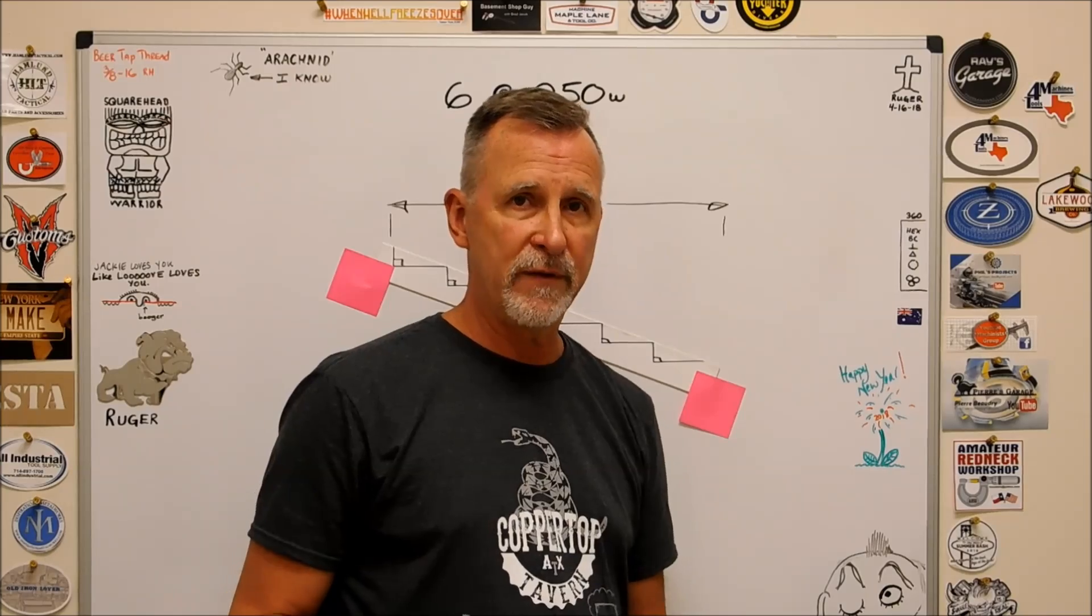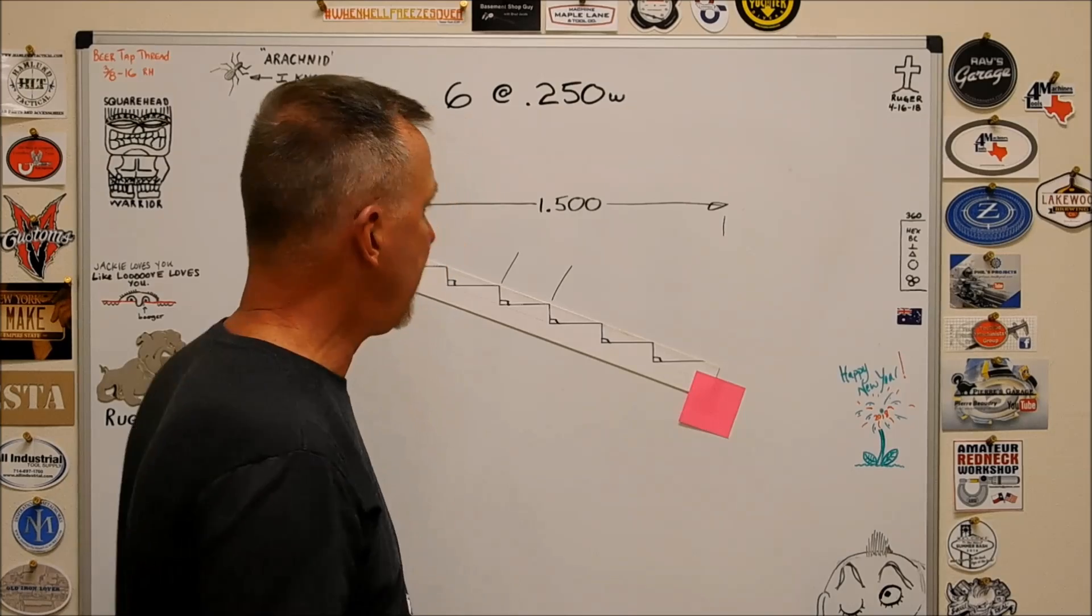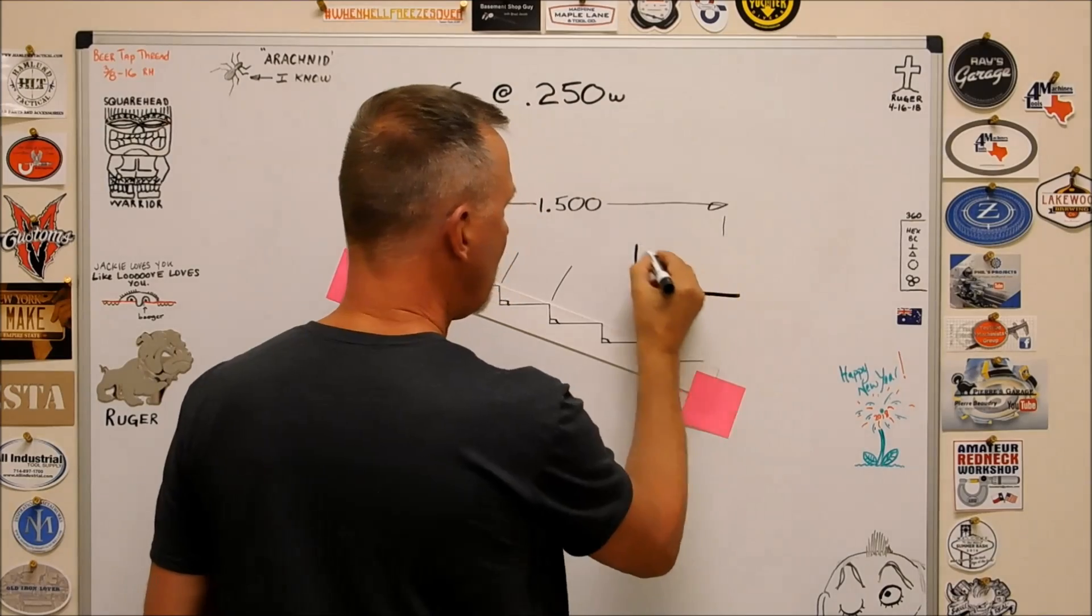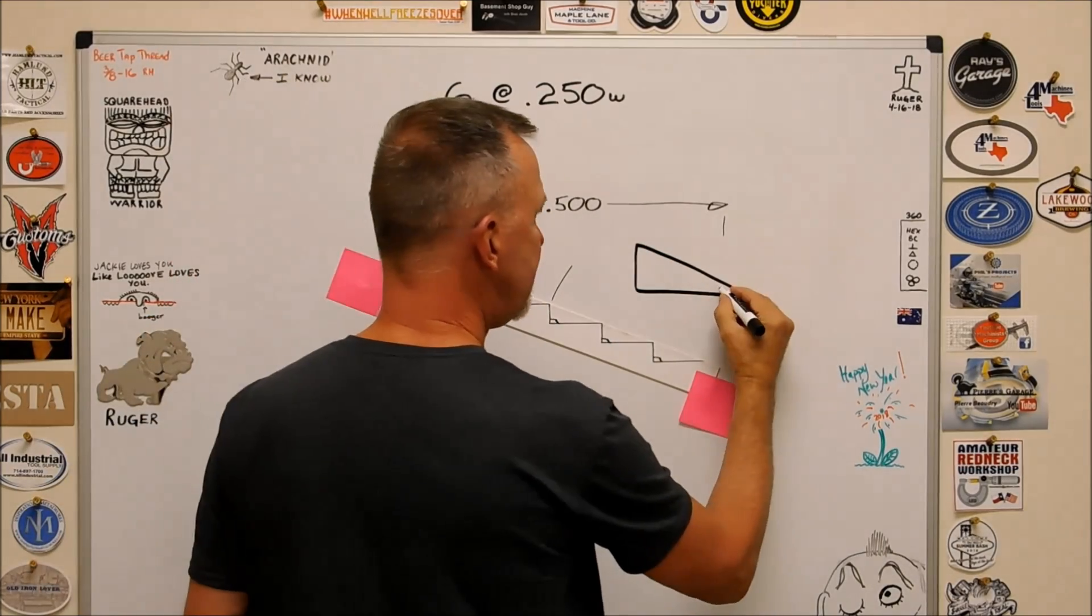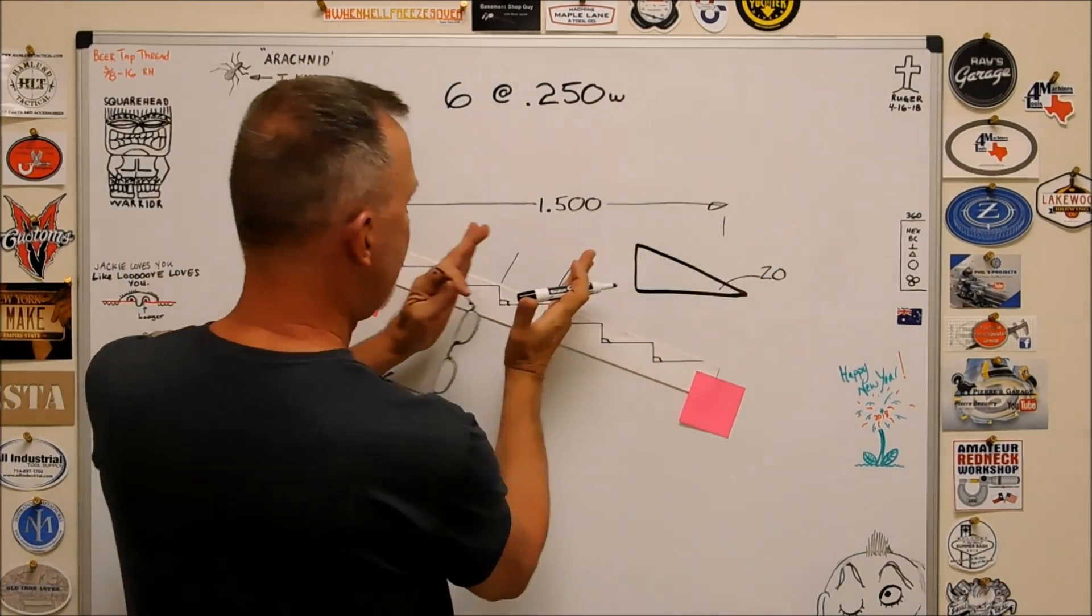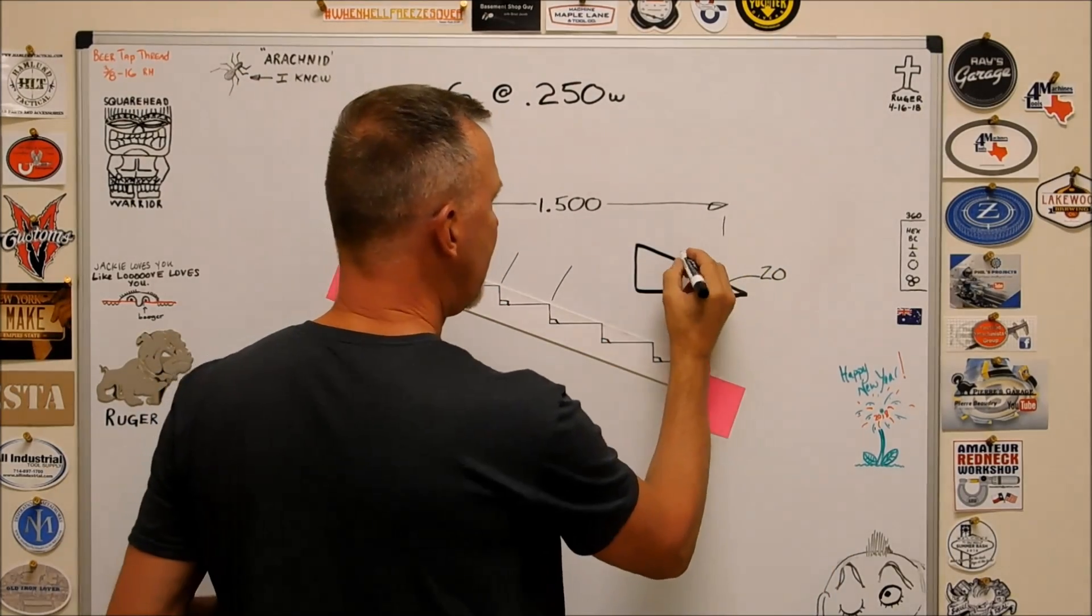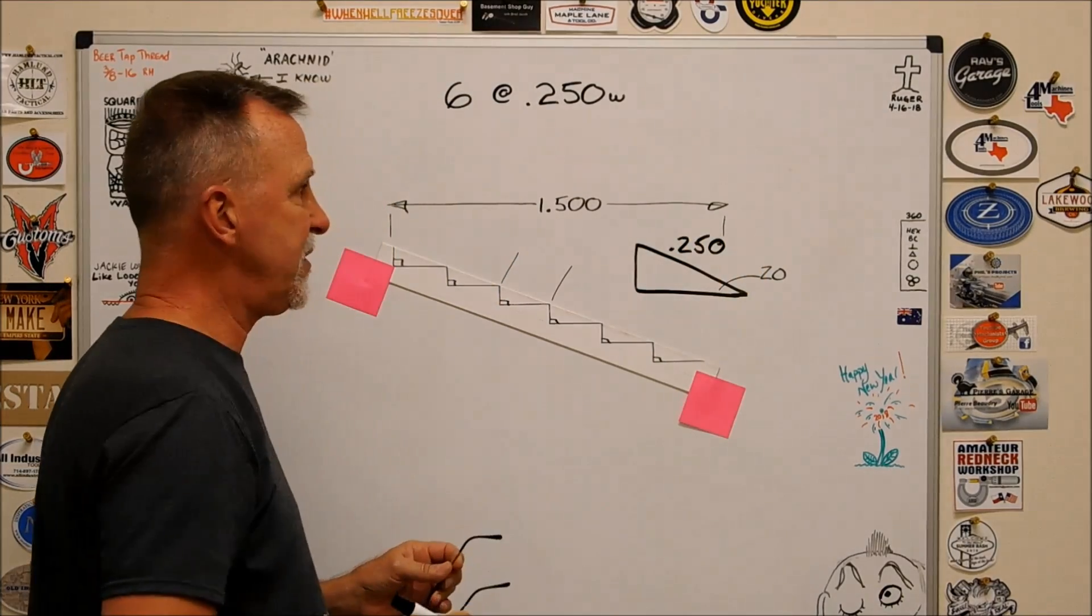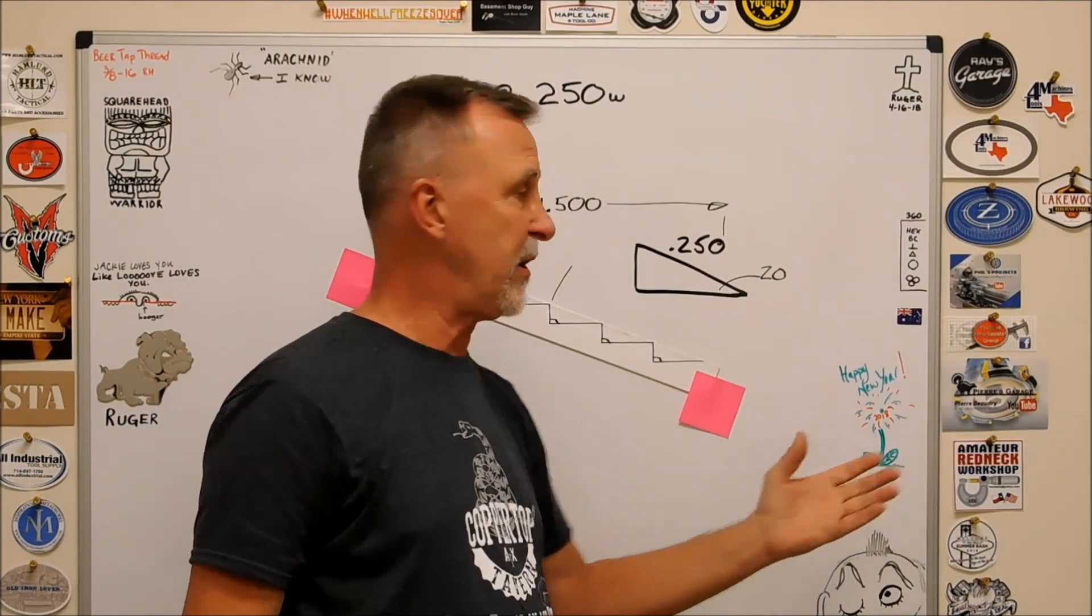And I can tell you that it's a lot easier if you know basically what angle you want that to be versus what depth you want that to be. Because figuring this out based on the depth without having an angle gets a whole lot more difficult than just say, okay, we're going to use 20 degrees.